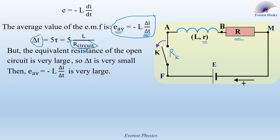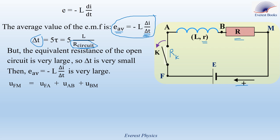But if the induced electromotive force is very large, why do sparks appear at the switch contacts? Let's determine the expression of the voltage across the switch. We will apply Kirchhoff's voltage law and follow the positive sense. U_fm, which is the voltage across the ideal battery, equals U_fa plus U_ab plus U_bm.